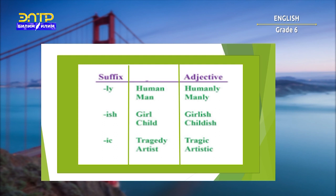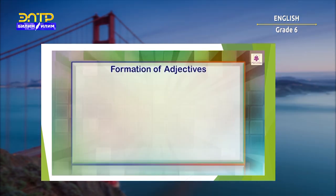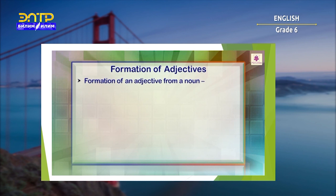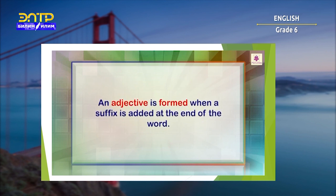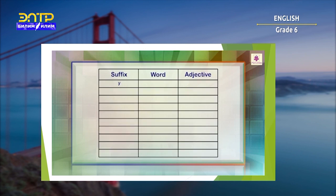To learn and understand, we will watch a video about how an adjective can be formed. We can form an adjective from a noun — for example, gold → golden. We can also form an adjective from a verb — for example, taste → tasty. An adjective is formed when a suffix is added at the end of the word.